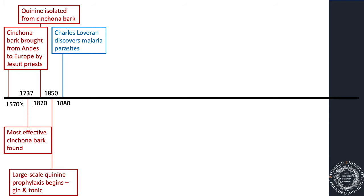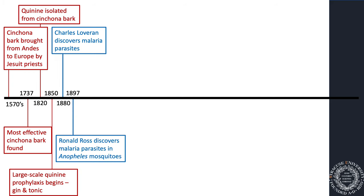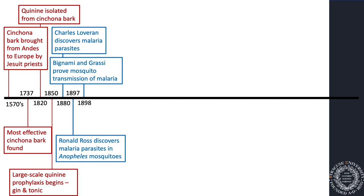It wasn't until 1880 that actual malaria parasites were identified in blood by Charles Laveran. In 1897, Ronald Ross discovered that the parasites were found in Anopheles mosquitoes and, dissecting the salivary glands, found the parasites there. Then in 1898, Bignami and Grassi, two Italians, proved that mosquito transmission was the driving cause of malaria.